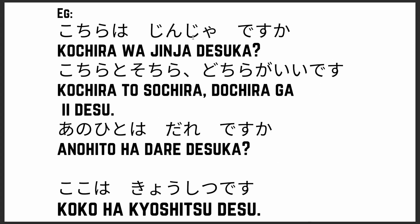Now let's look at some examples. 'Kochira wa jinja desu ka?' — 'jinja' is a shrine, so you are being polite asking 'is this a shrine here?' Next: 'Kochira to sochira, dochira ga ii desu?' — we haven't covered the 'to' particle yet but it means 'and,' so this is asking 'here and there, which is fine?' — meaning either one is fine.